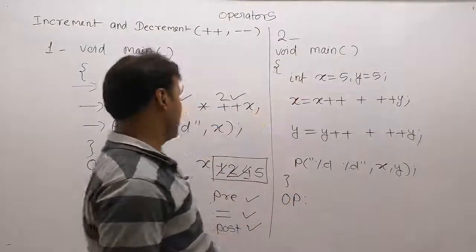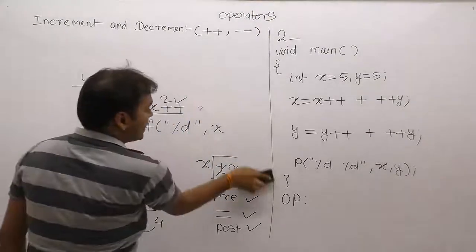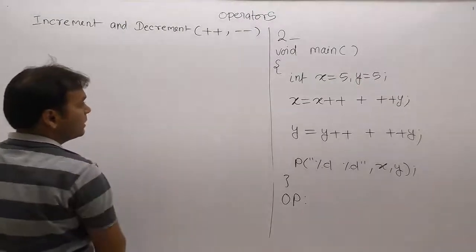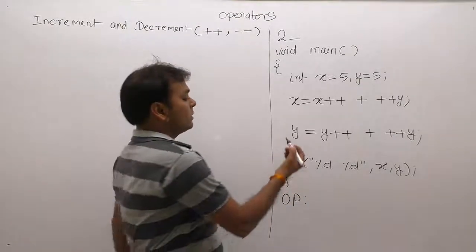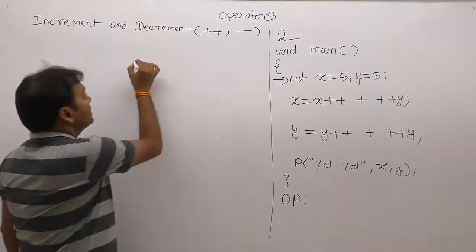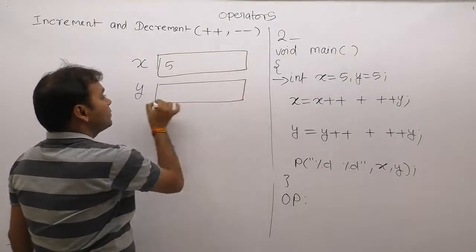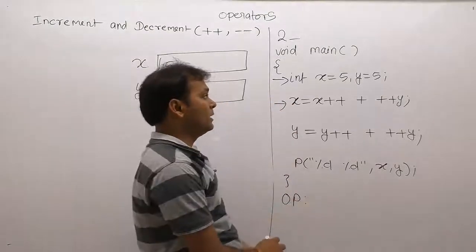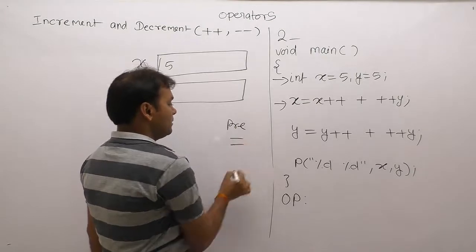Now for the second expression in program two, we again identify the operations — are they assignment or initialization? According to the assignment rules, we will solve the same expression again. First, the declarations: x is initialized to 5 and y is also initialized to 5. We solve the expression one by one by applying the same rules: perform all pre, then assignment, then post.